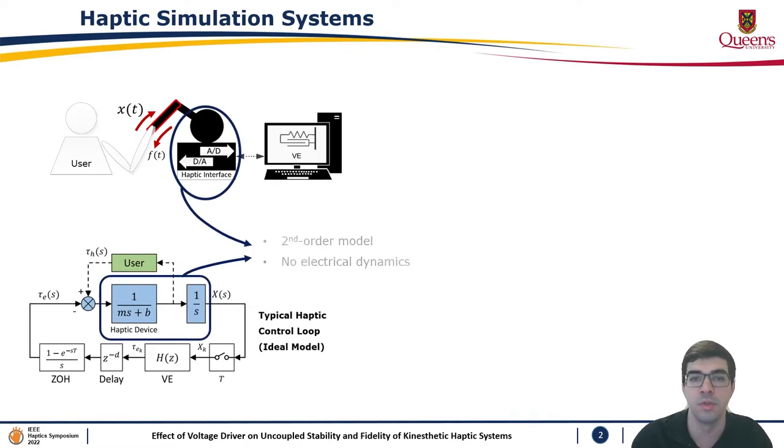A typical model is shown here, where the HAPT device is represented as a second-order dynamic model and it's assumed an ideal relationship between the VE and actuated torque.